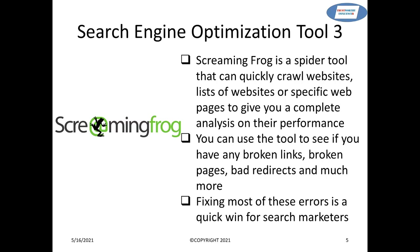Screaming Frog is also used to look for expired domains. It's a tool you can use on top of either SEMrush or Moz, and it really works well to find those errors that will help you achieve great successes in your search optimization.